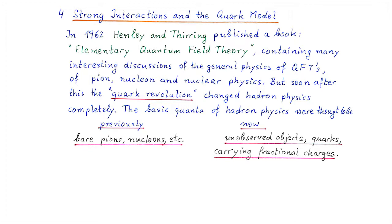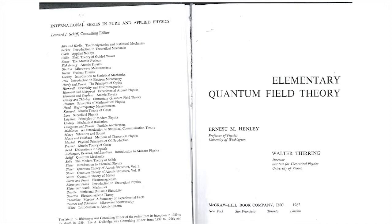Last topic: strong interactions in the quark model. In 1962, Henley and Thirring published a book, Elementary Quantum Field Theory. That's also a very interesting book with many interesting discussions of the general physics of quantum field theory. As applications, they discussed pion physics, pion-nucleon physics, nuclear physics. However, soon after this book appeared, there was what I would call the quark revolution in particle physics.